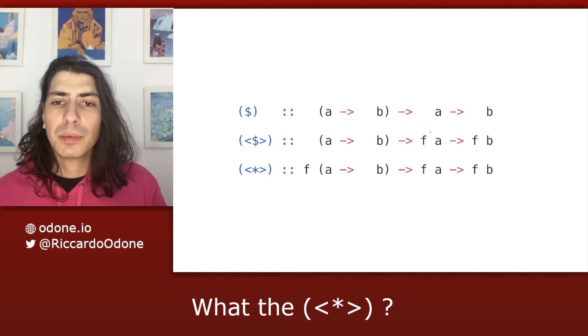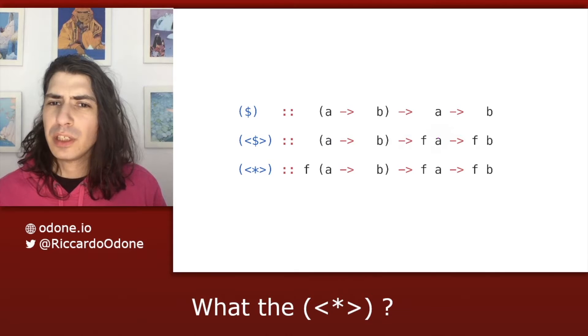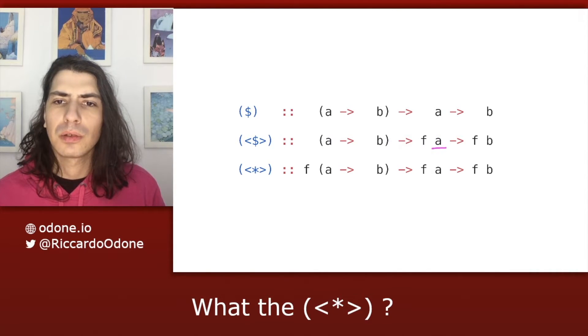In terms of fmap, we have a similar behavior. We just need to unwrap somehow the value of type a from this functorial context f. And as we have seen in the previous video, the way this step function is applied depends on the semantics of the context f. So in other words, we can say we have one discriminator here on how the step function is applied.